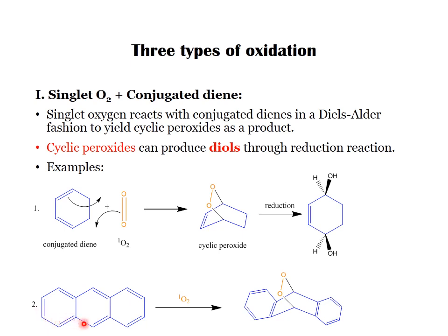In the second Diels-Alder example, anthracene (also a conjugated diene system) reacts with excited state singlet oxygen in a 4+2 addition. The oxygen bridges across the ring, forming a peroxy linkage between the two carbons to give the corresponding peroxy compound. Reduction of this compound likewise gives the corresponding diol.